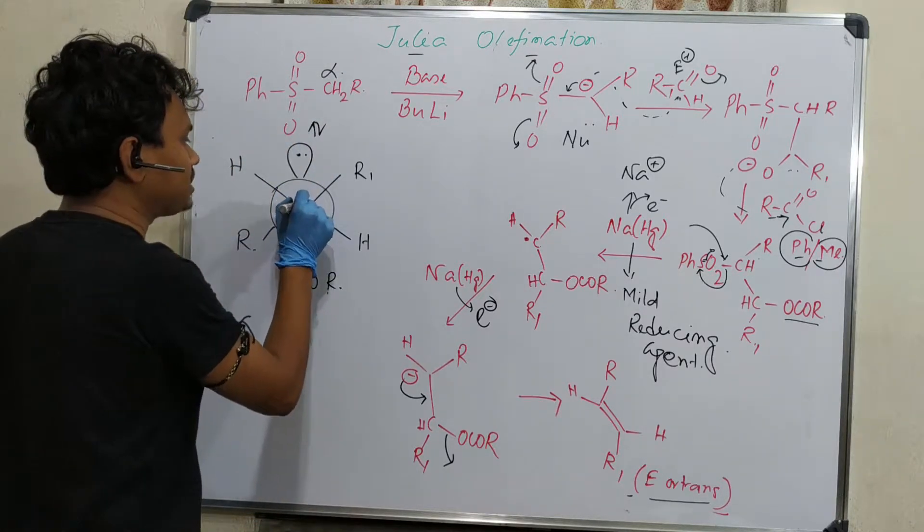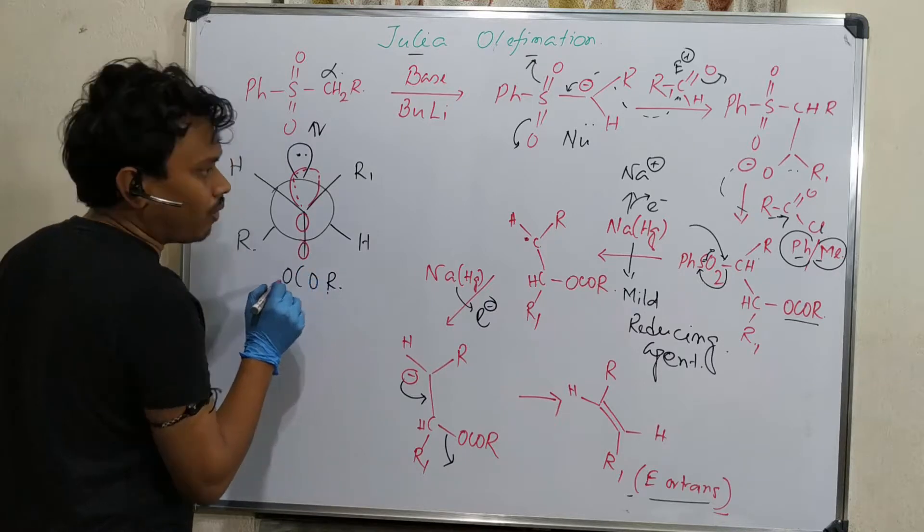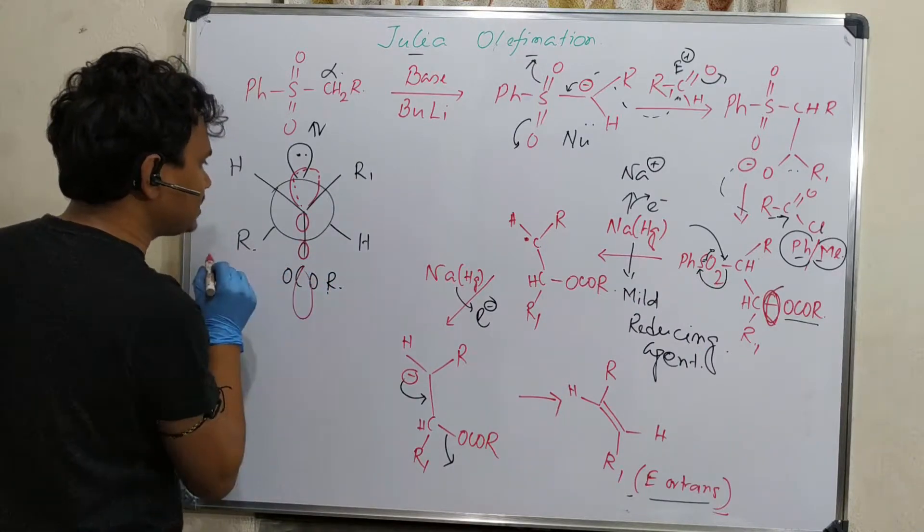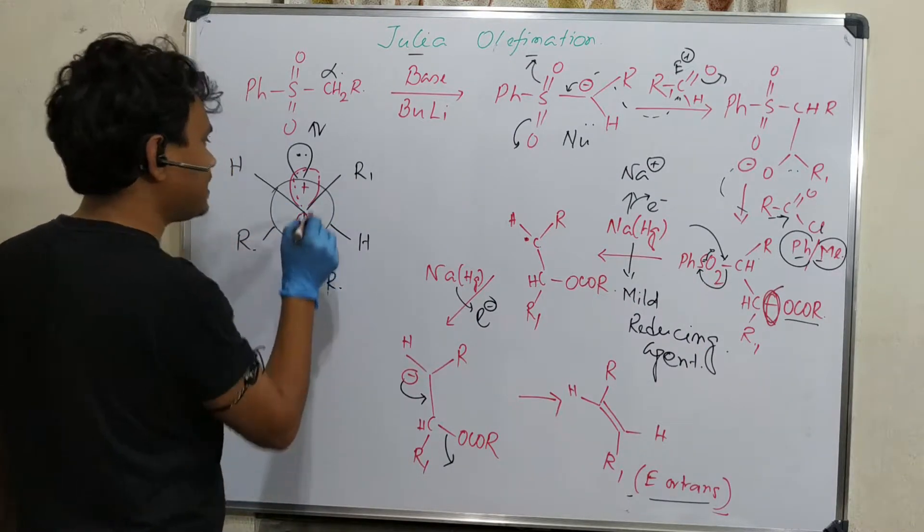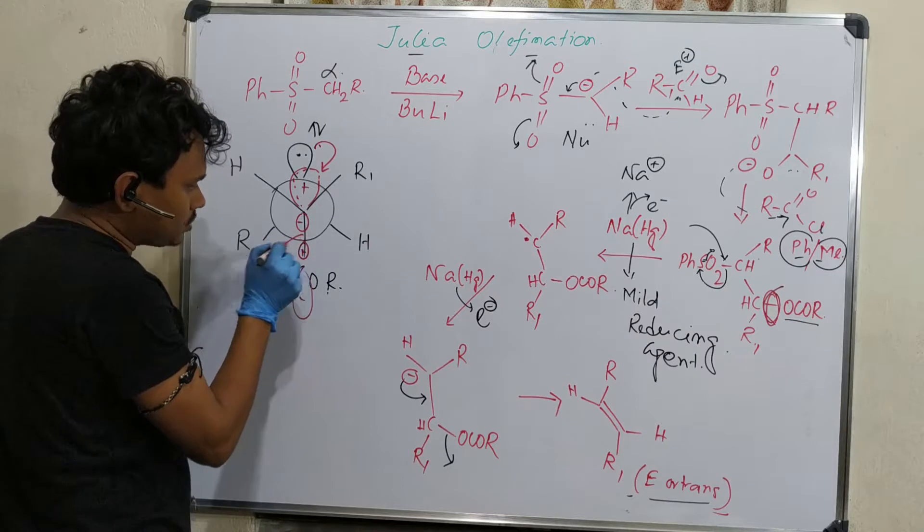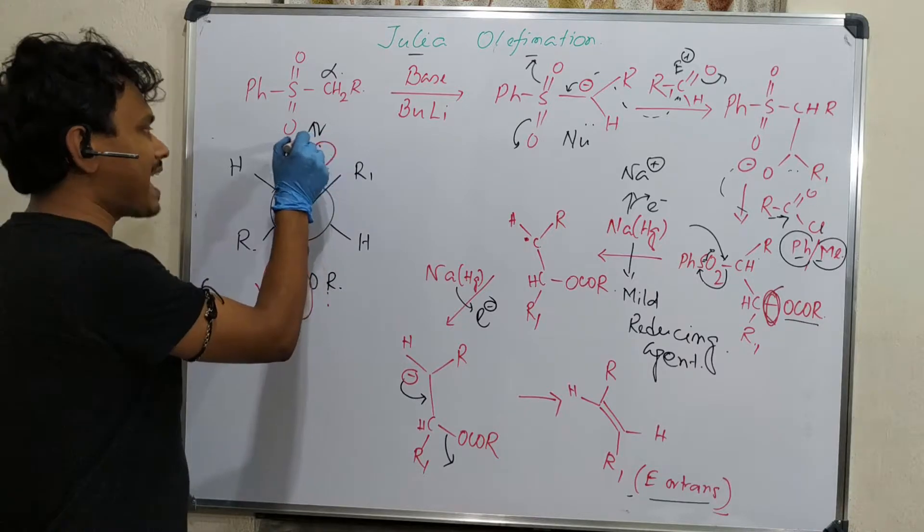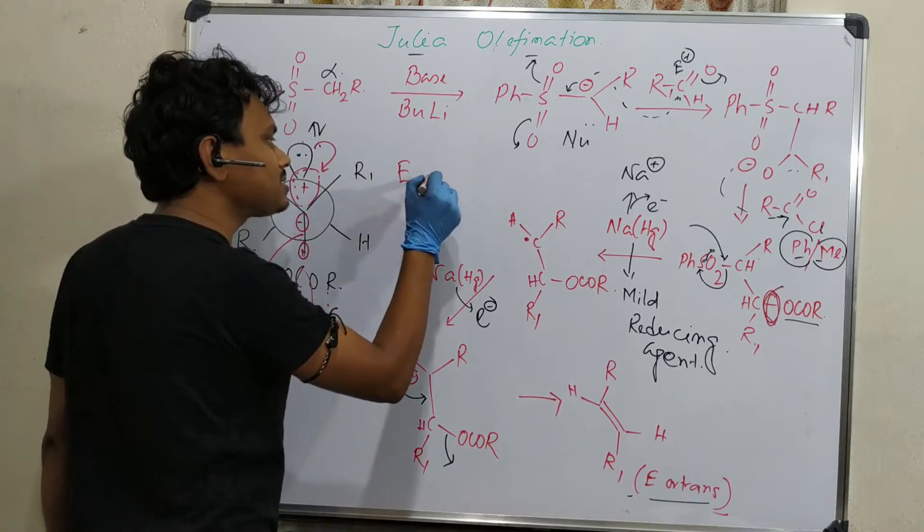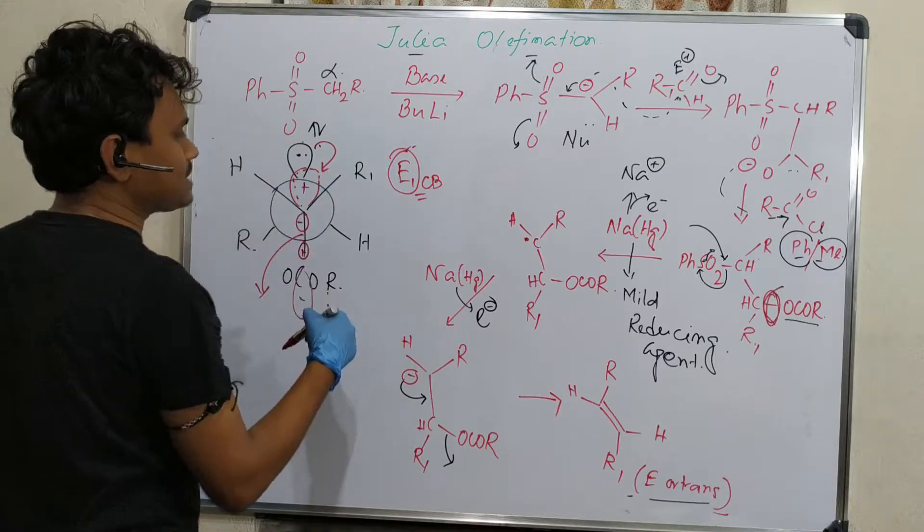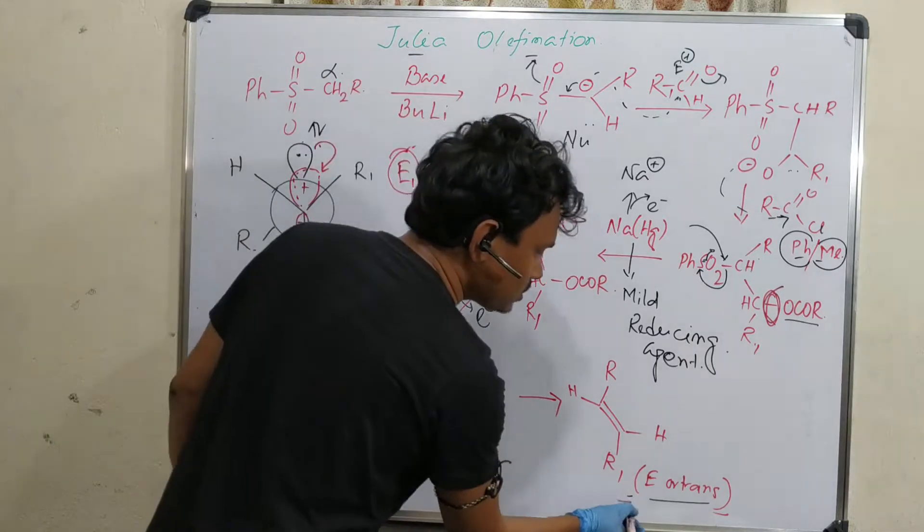In this trans orientation, it can react with the sigma star of this bond. Sigma star is vacant, so this electron pair is donated to sigma star. Consequently, this bond is broken and the geometry is trans because this is the E1CB pathway. This anion is generated, and conjugate base is responsible for elimination, so it is produced trans.